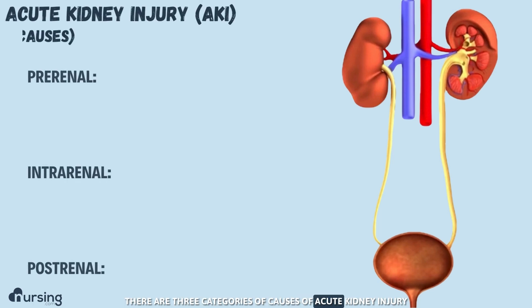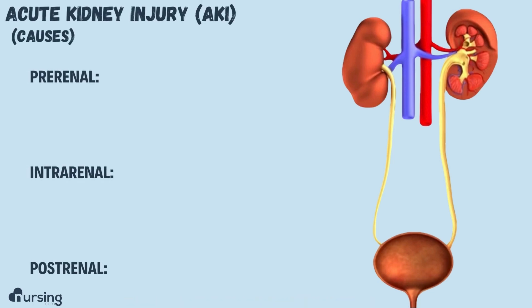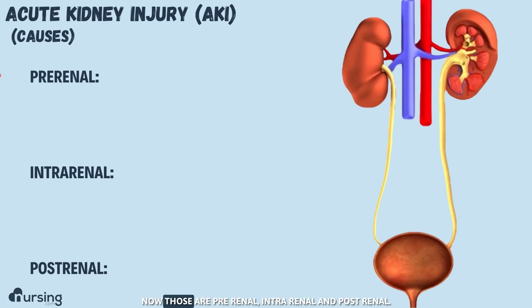There are three categories of causes of acute kidney injury and they have to do with the source of the problem. Those three categories are pre-renal, intra-renal, and post-renal.